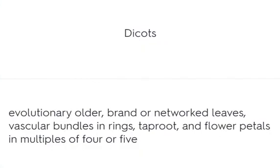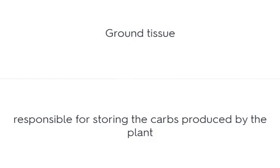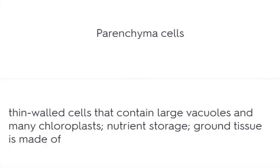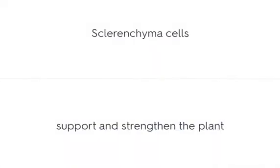Dicots are evolutionarily older, with branched or networked leaves, vascular bundles in rings, a taproot, and flower petals in multiples of 4 or 5. Ground tissue is responsible for storing the carbohydrates produced by the plant. Parenchyma cells are thin-walled cells that contain large vacuoles and many chloroplasts and are used for nutrient storage. Sclerenchyma cells support and strengthen the plant.